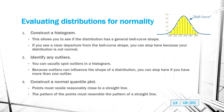To evaluate a distribution for normality, there's a three-step process. The first step is to construct a histogram to see if the distribution has a general bell shape. If we don't see that, there's no point going further — we just fail the test. If we do see the general bell shape, the next step is to identify any outliers, which you can usually spot in a histogram. If there's more than one outlier, stop — multiple outliers can influence the shape of a distribution and we'd fail the test.